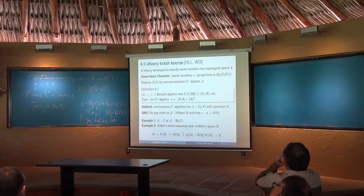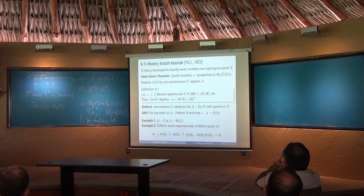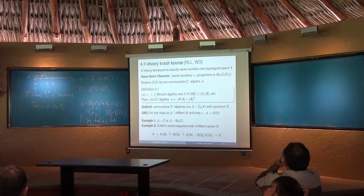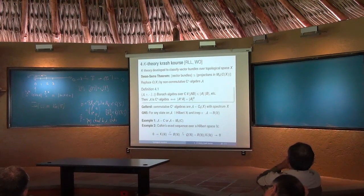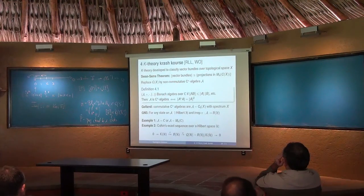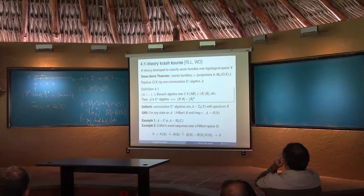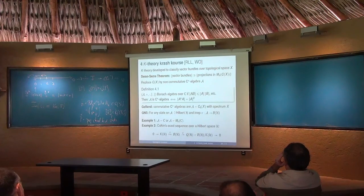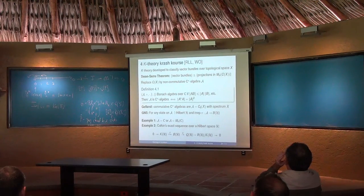We already had examples: the simplest is the complex numbers, or matrices with matrix product. We also had the continuous functions and the Toeplitz algebra. Here's another interesting exact sequence: the Calkin sequence. You have the bounded operators on the Hilbert space B(H), which contains the compact operators as norm limits of finite dimensional matrices. You project down onto the quotient, which is called the Calkin algebra. This also produces an interesting exact sequence of algebras.